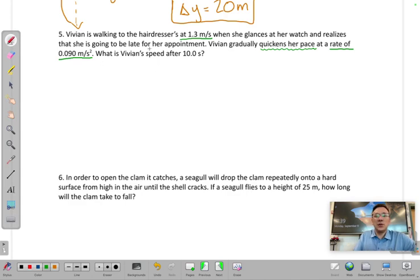And then it says, what is Vivian's speed after 10 seconds? So another indicator that we actually need to find her final velocity and that we were given the acceleration.